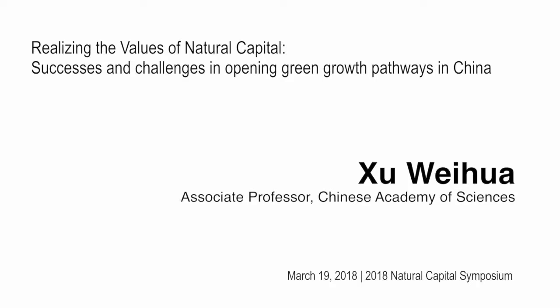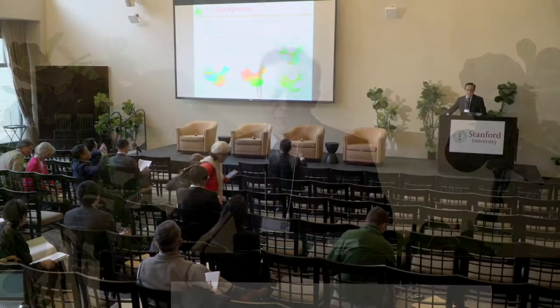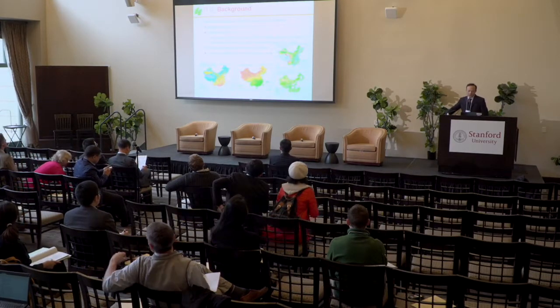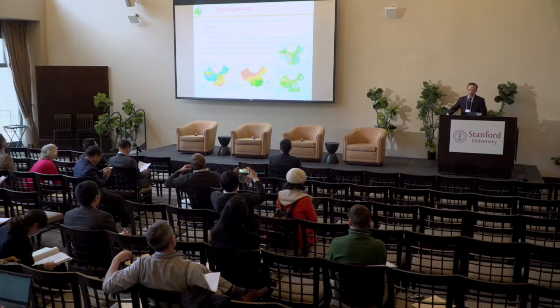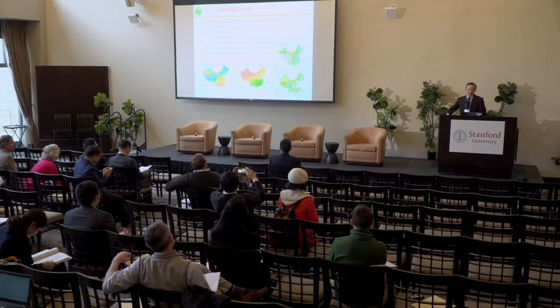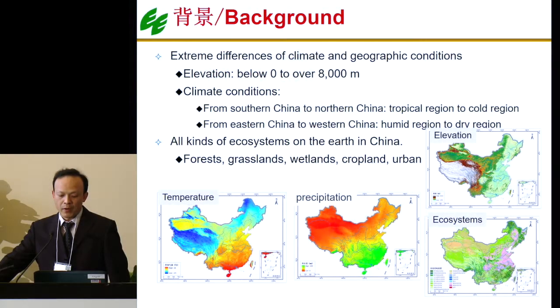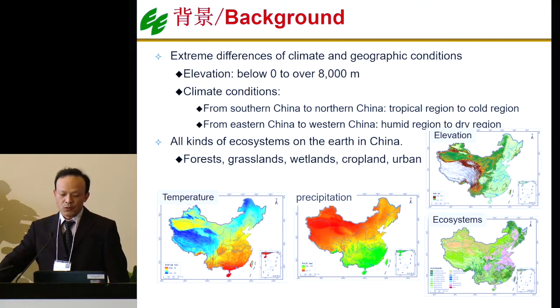First, I'll introduce the background. China is a very big country with extremely different climate and geographic conditions. For example, the elevation ranges from below zero to over 8,000 meters. It's also a country with different climates, including tropical regions and cold regions, and humid areas and dry areas.